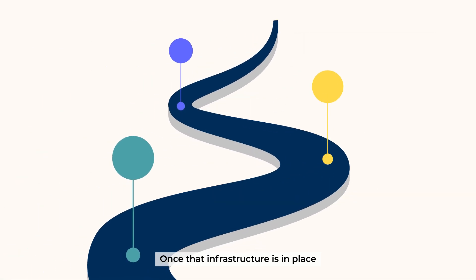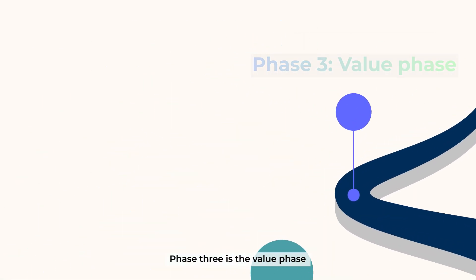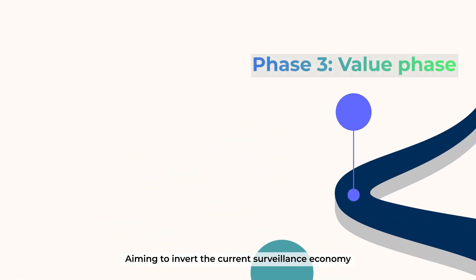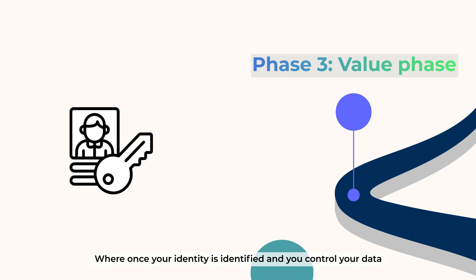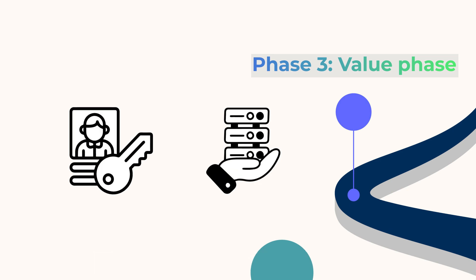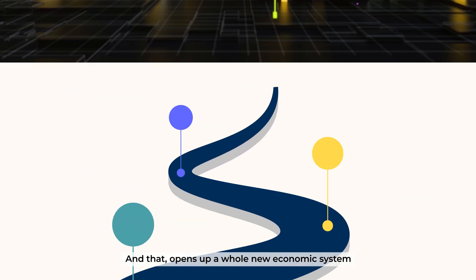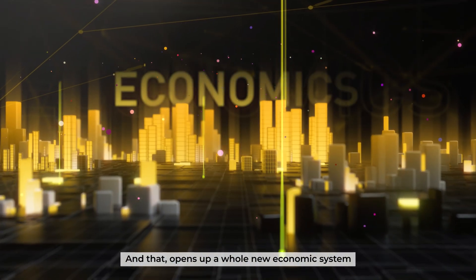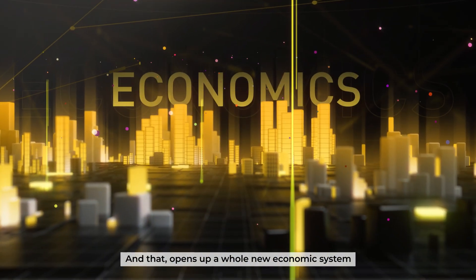Once that infrastructure is in place, Phase 3 is the value phase, aiming to invert the current surveillance economy. Where once your identity is identified and you control your data, you can get value for it on your own terms. And that opens up a whole new economic system.